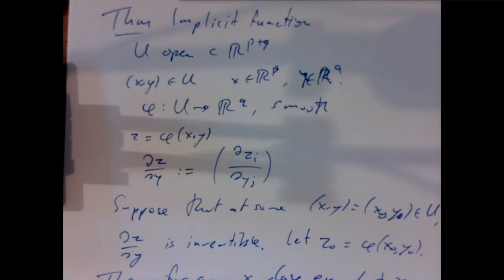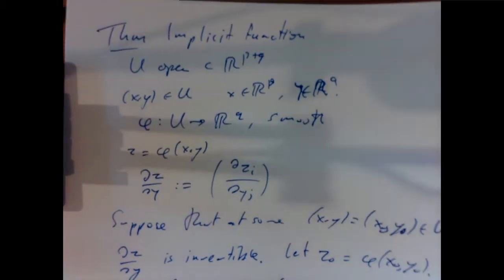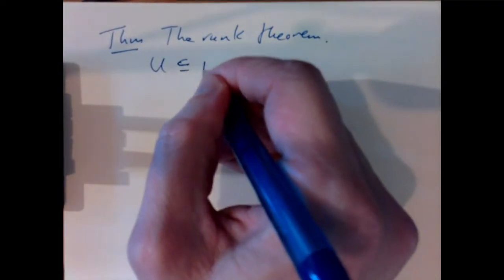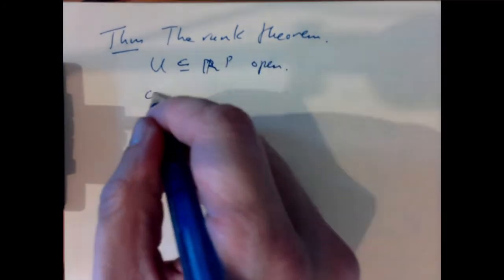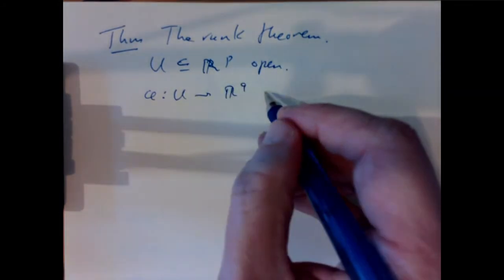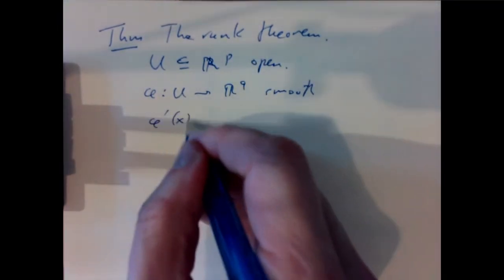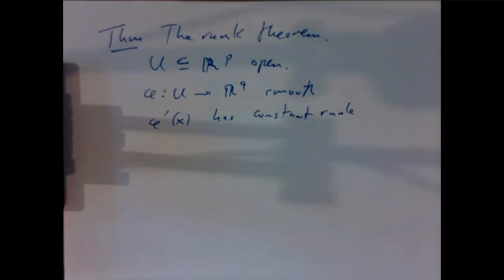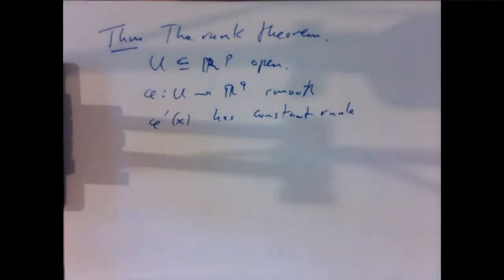The rank theorem is probably less commonly presented in several variable calculus classes. Rather than proving the solvability of equations, it's concerned with the question of how to decide if a map can be made into a linear map by a change of variables. We have U open in Rᵖ, φ: U → Rᵍ smooth, and we suppose that φ′(x) as a matrix has constant rank.